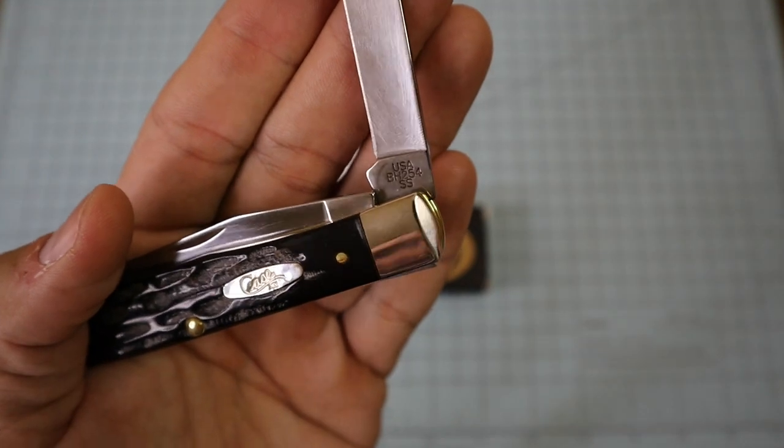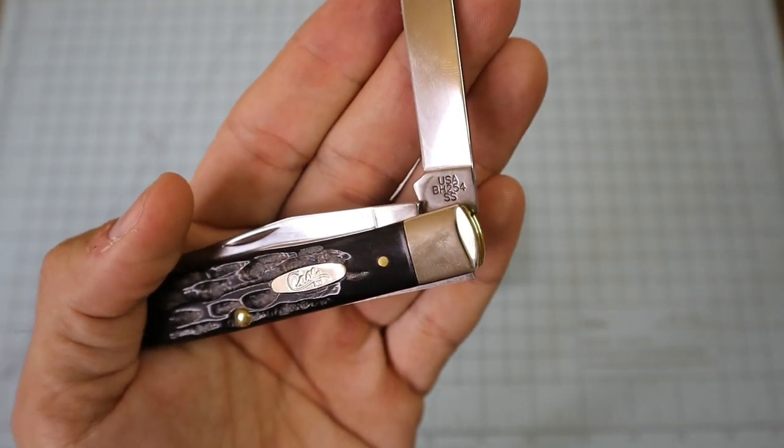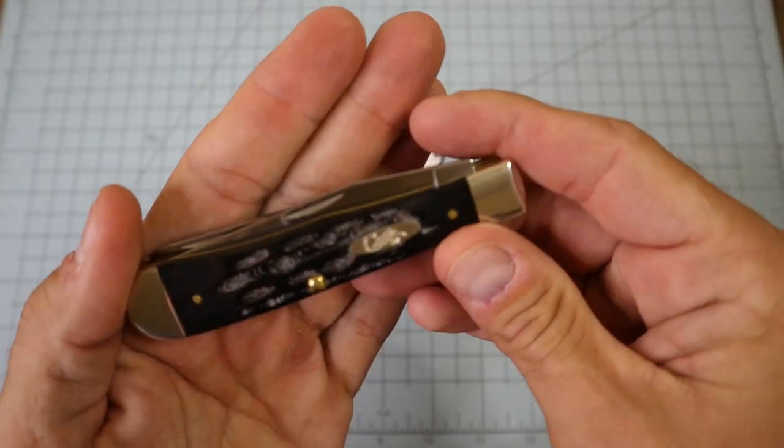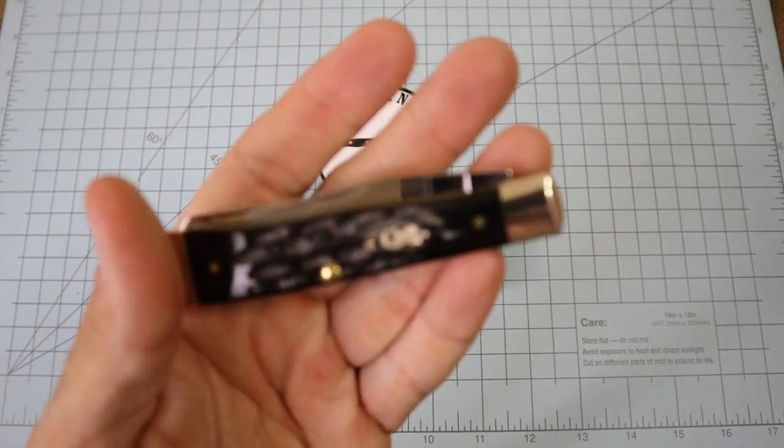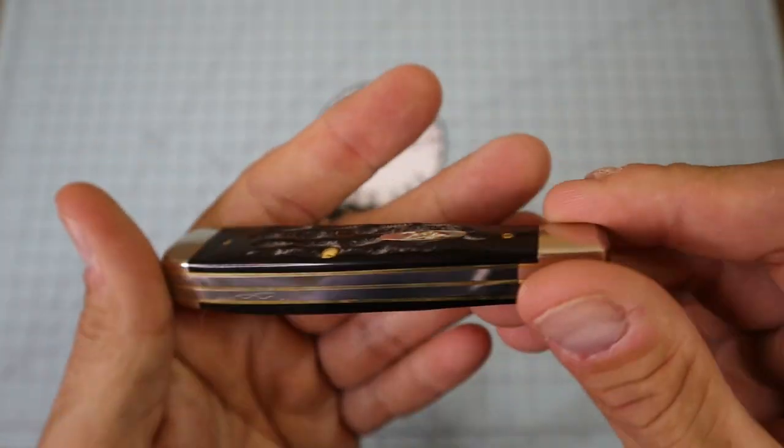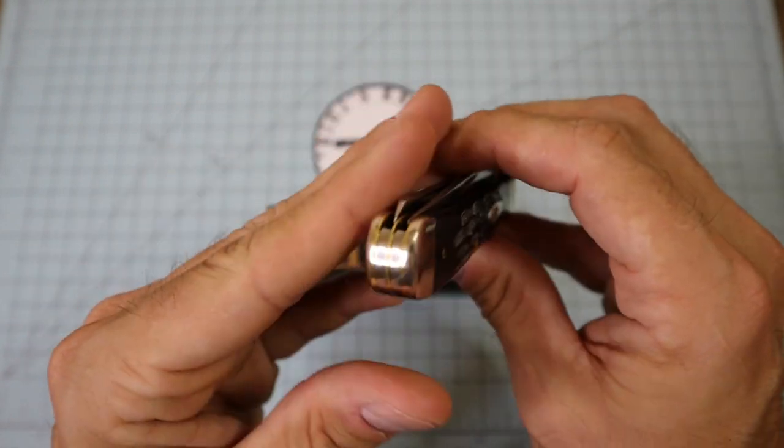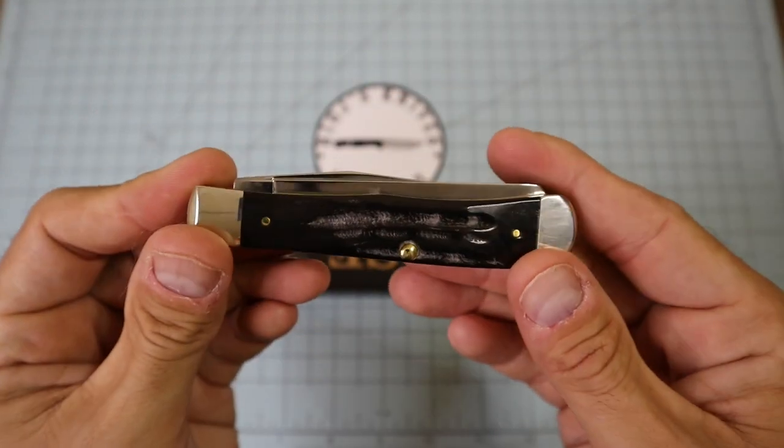Let's look at the tank stamp there - USA BH254SS. Of course we all know that BH stands for buffalo horn. He had three of these out there and of course I dug through all three of them and got the one I thought had the best QC. There was one that had a marking on the back and another one where the clip point was just a little off center, so I went with this one.